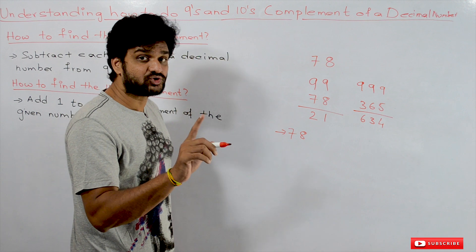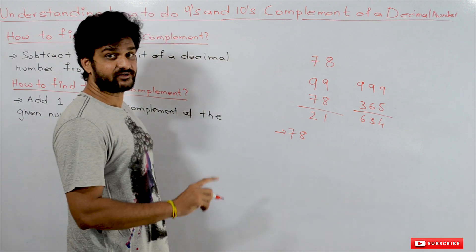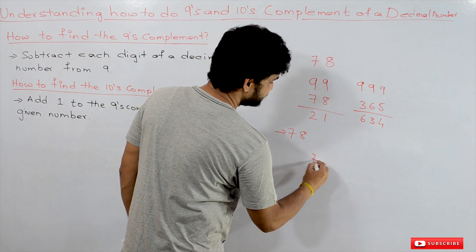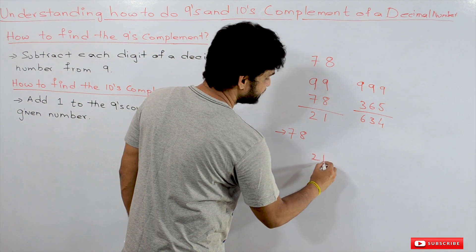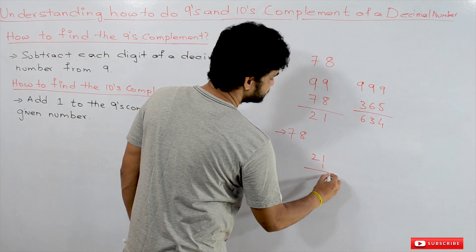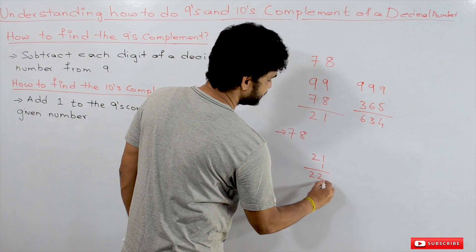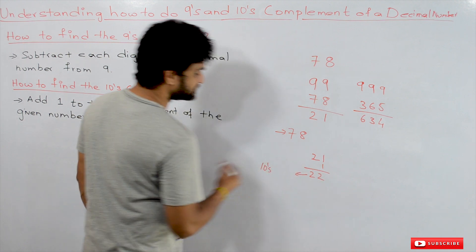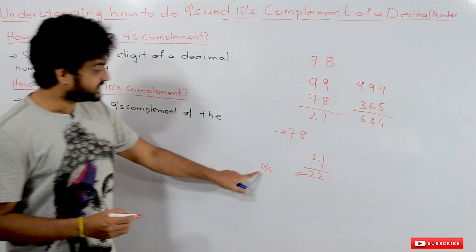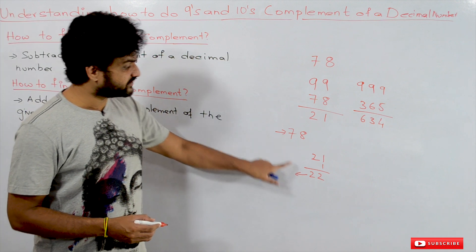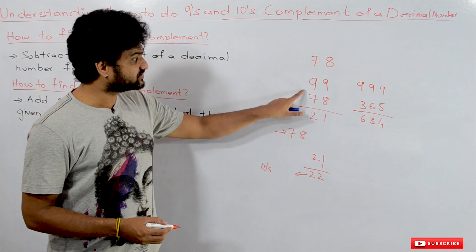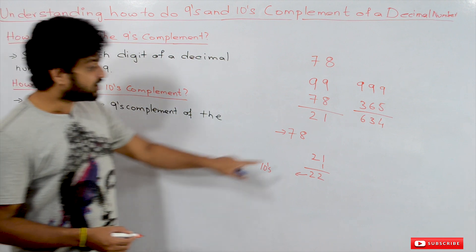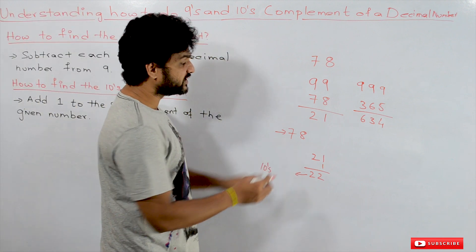For example, what is the 10th complement of 78? Add 1 to the 9th complement of 78. The 9th complement of 78 is 21. Adding 1 to 21 gives 22. So the 10th complement of 78 is 22, and the 9th complement of 78 is 21.